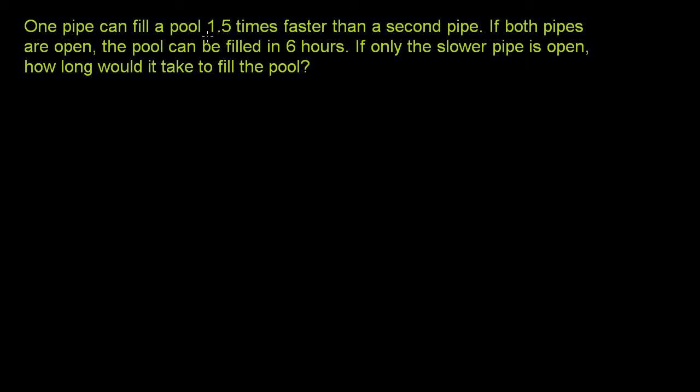So once again, one pipe can fill a pool one and a half times faster than a second pipe. If both pipes are open, the pool can be filled in six hours. If only the slower pipe is open, how long would it take to fill the pool?